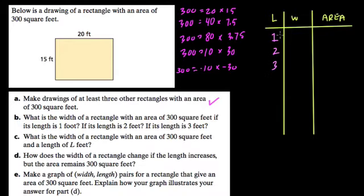So if the length is 1, the width must be 300, because 1 times 300 is 300. If the length is 2, the width must be 150. If the length is 3, the width must be 100, and that must be 300. At this point you should reflect and think, okay, what am I doing here?